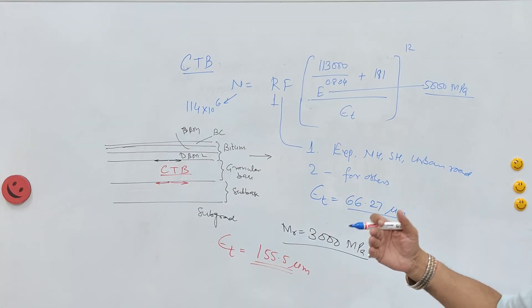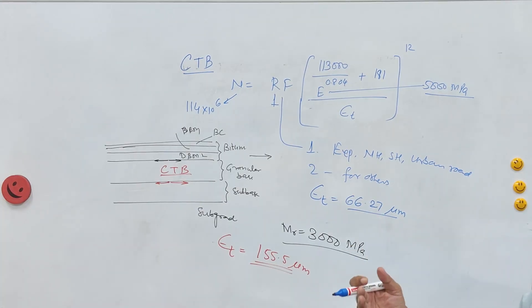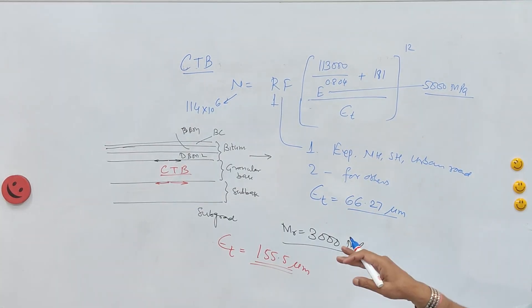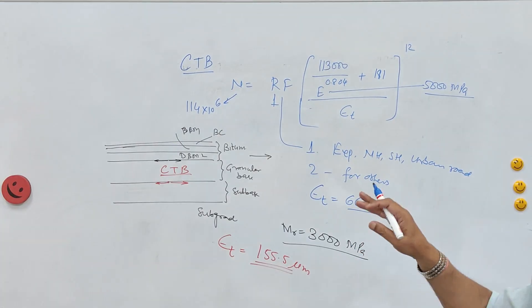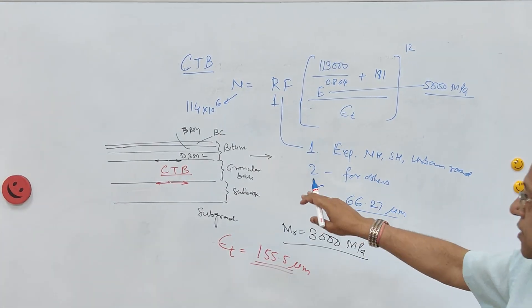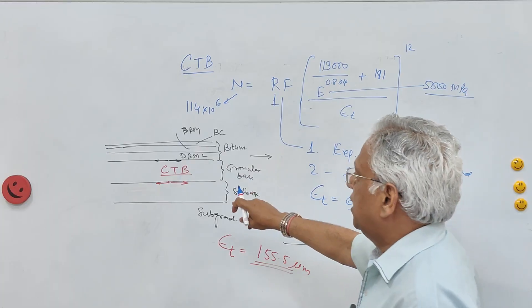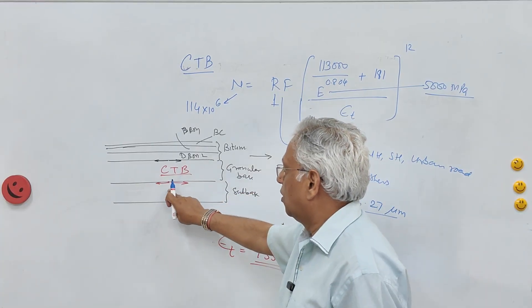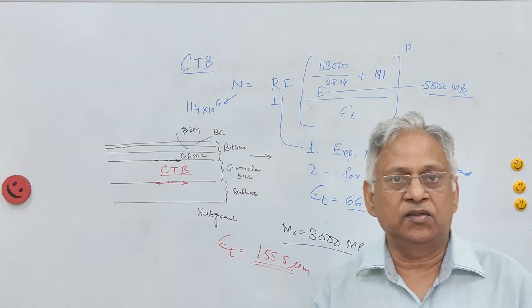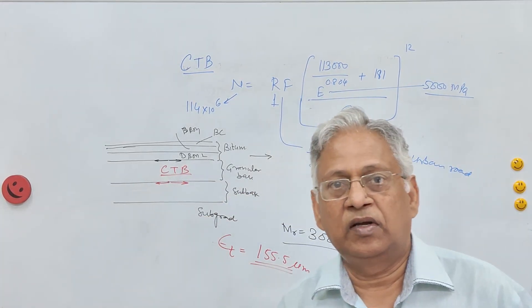That is how we calculate permissible strains: at the top of subgrade, at the bottom of the bituminous layer, and at the bottom of the CTB layer. Thank you very much for watching this video.